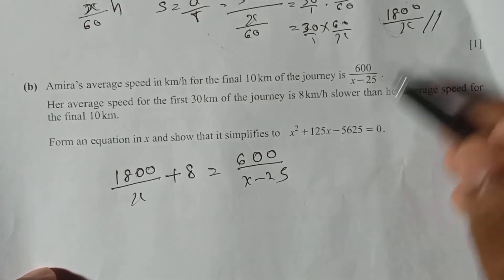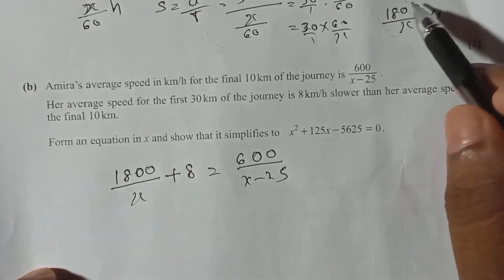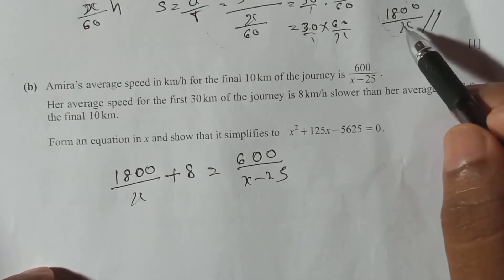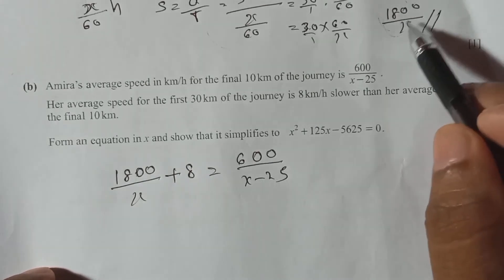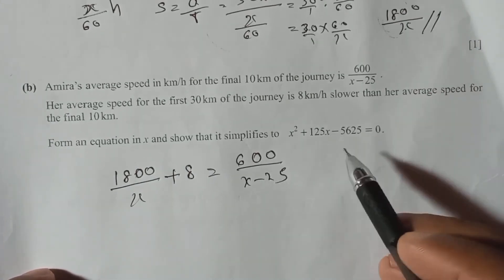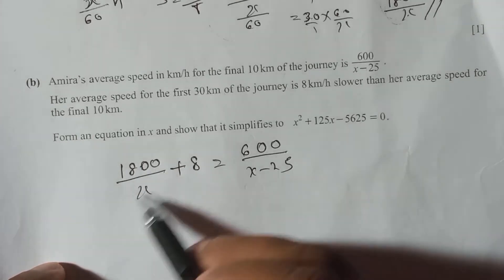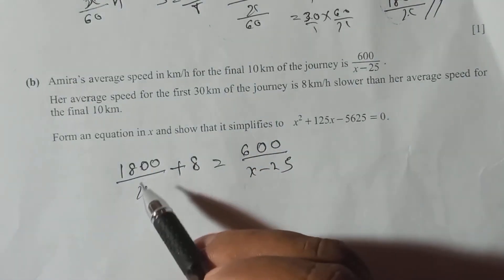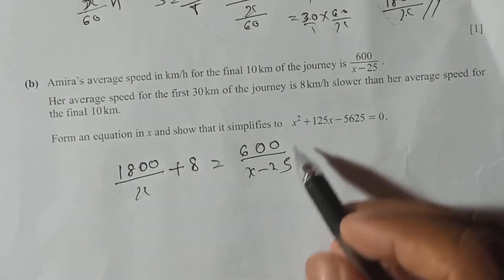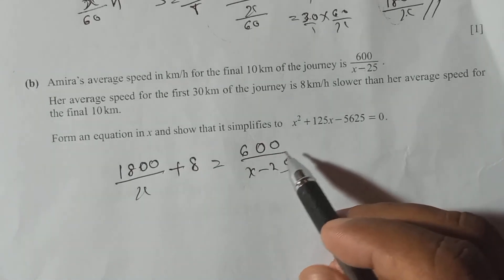If you need to make these two equal, you had to add 8 km per hour to the smaller one — the first 30 km speed. Then both speeds will be equal. That's what we did here: 1800/x is 8 km less, so we add 8 to it.